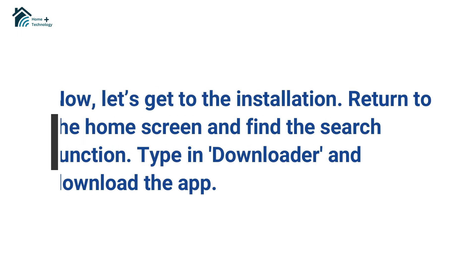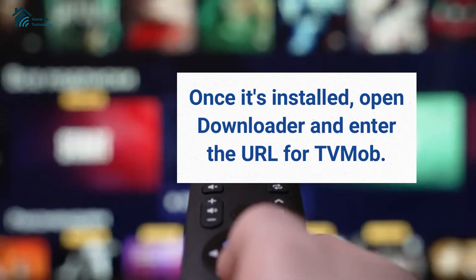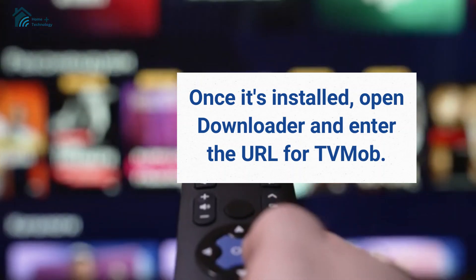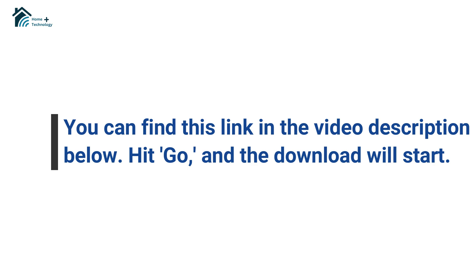Now let's get to the installation. Return to the home screen and find the search function. Type in Downloader and download the app. Once it's installed, open Downloader and enter the URL for TV Mob. You can find this link in the video description below. Hit Go and the download will start.